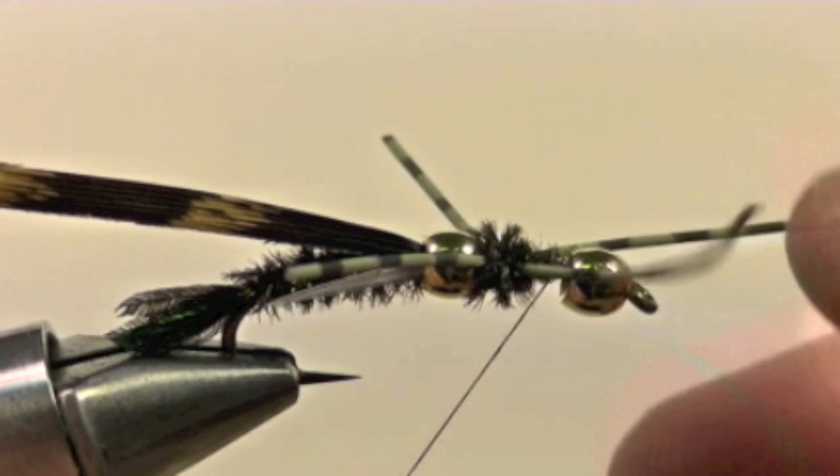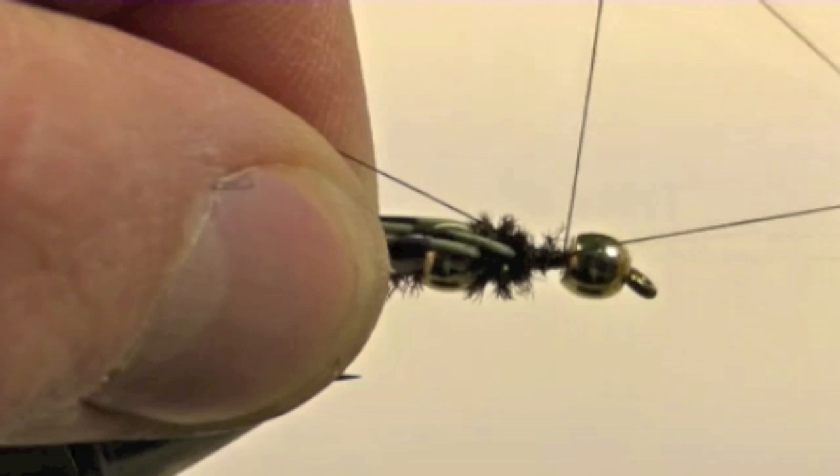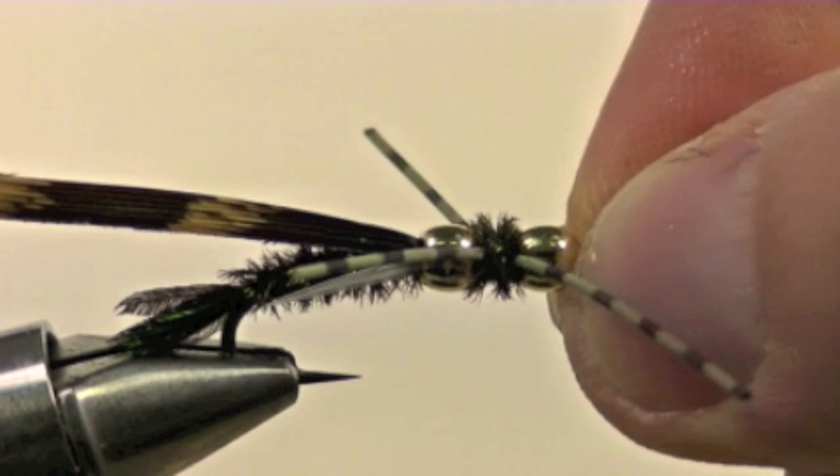Now we will whip finish for the second time on this fly and clip off the thread. Start your thread again in front of the front bead.